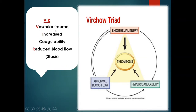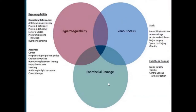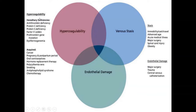To summarize the triad: vascular trauma is endothelial injury; increased coagulability means hypercoagulability; reduced blood flow — that is stasis — is abnormal blood flow. Hypercoagulability, stasis, and endothelial damage are well defined. Hypercoagulability is caused by two types of disorders: hereditary deficiencies or disorders, and acquired disorders.